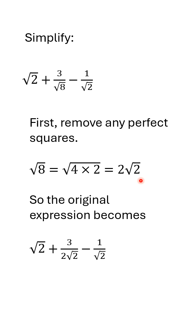So, substituting that into the original expression, this middle term, I end up with the square root of 2 plus 3 over 2 times the square root of 2 minus 1 over the square root of 2.